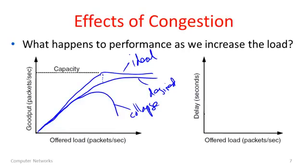I've shown goodput on the axis rather than throughput because goodput is desired traffic that comes through the network. If you retransmit the same packet seven times, it only counts once as useful information. In the collapse scenario, because packets are lost we're retransmitting them. If protocols aren't designed for very high levels of load, we can end up retransmitting packets many times and having them lost many times. So even though we're sending a lot of packets, less useful information gets through — the network is in a state of collapse. This in fact happened on the internet in the early days.